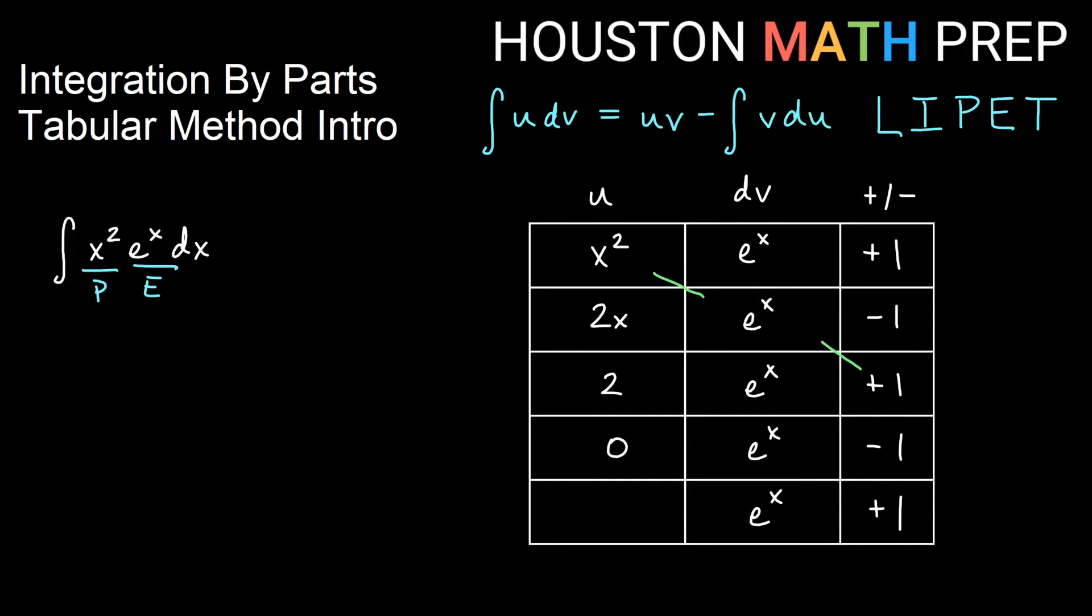So my first term in the answer is x squared e to the x times a positive 1, which would just leave it positive.